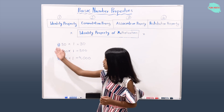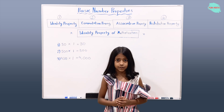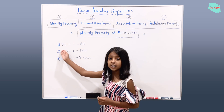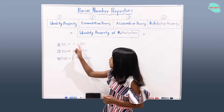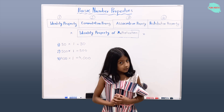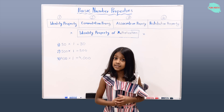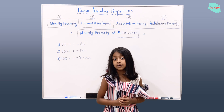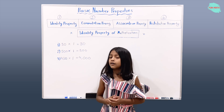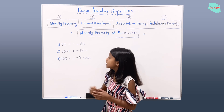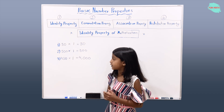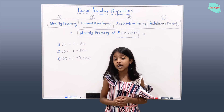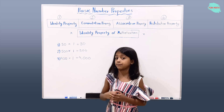Let's talk about these three examples of multiplication. The first example is 30 times 1 equals 30. 30's identity did not change after multiplying by one. The second example: 500 times 1 equals 500. 500's identity did not change after multiplying by one.